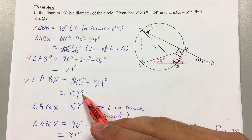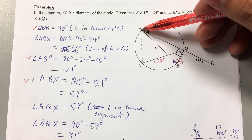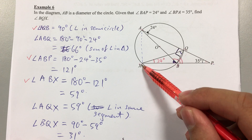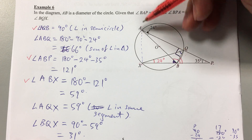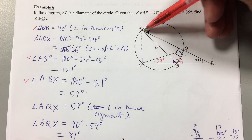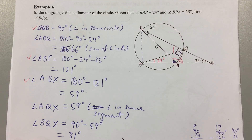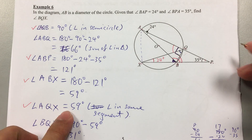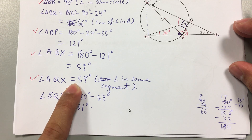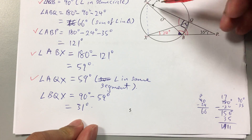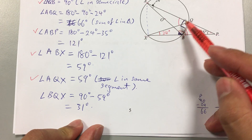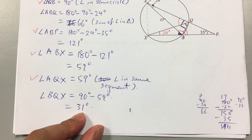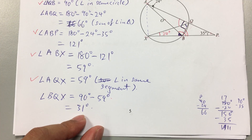Now look very carefully at angles ABX and XQA. These two angles are actually angles in the same segment. Since I know it's an angle in the same segment, angle AQX is also 59 degrees. And since AQB is 90 degrees, angle XQB is just 90 degrees minus 59 degrees, which gives 31 degrees. So that is the answer.